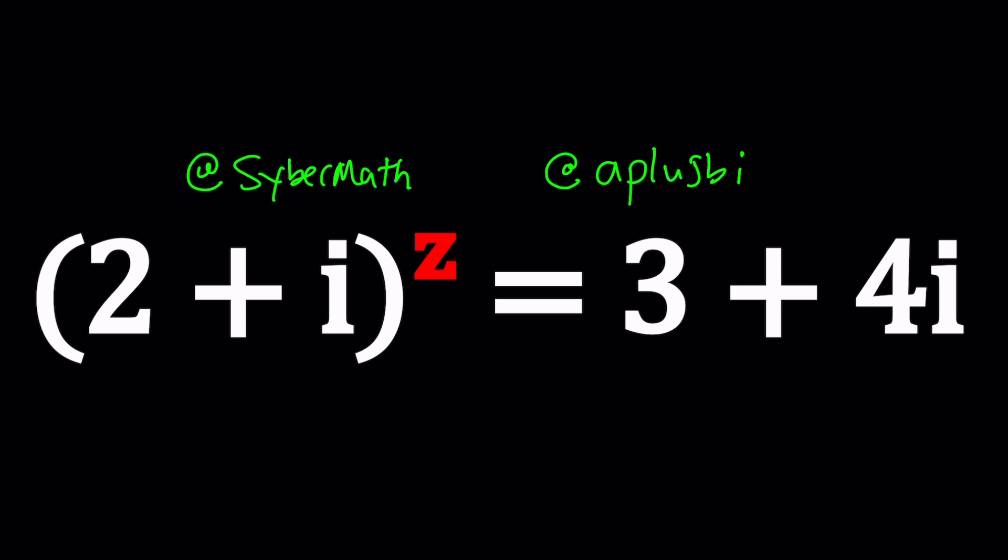So we have this equation, which is called exponential for a good reason. 2 plus i, which is a complex number, raised to the power z, equals 3 plus 4i. So how do you solve an equation like this? If they told you 2 to the power z equals 4, you could solve it easily because you know that z is 2. You can write 4 as 2 squared. That would be super easy.